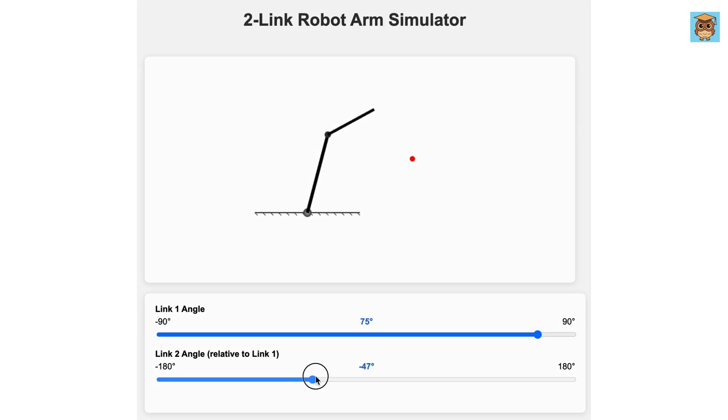Here's the big question. What should the angles of the first and second links be so that the end effector reaches that target position?